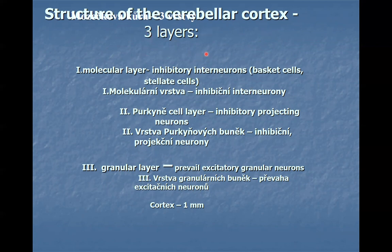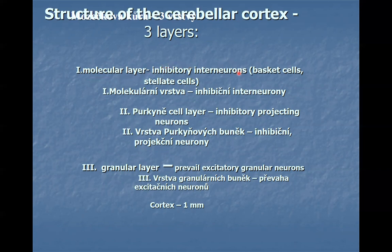The structure of the cerebellar cortex consists of three layers. The first layer is named the molecular layer. It contains a small number of cells, which are inhibitory interneurons divided into two subpopulations: basket cells and stellate cells. All these interneurons are inhibitory and use GABA — gamma-aminobutyric acid — as their neurotransmitter.